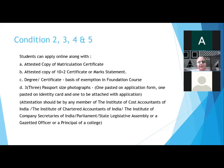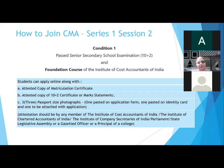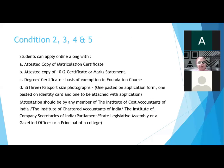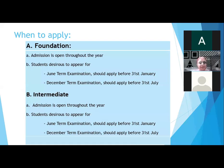Attestation must be done by a member of the CA, CWA, or CS Institute, a Member of Parliament, a Member of State Legislative Assembly, a gazetted officer, or a principal of a college. Along with the three passport-size photographs, these documents need to be applied online, and physical documents must be submitted at local chapters or regional offices, depending on the candidate's location.